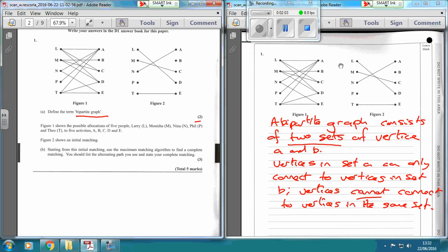So it's worth two marks. So those are two key points that you need to do. You've got two sets of vertices and say that vertices in A have to connect to vertices in set B and that they cannot connect to the same set. If you've done that then you've got yourself two marks.